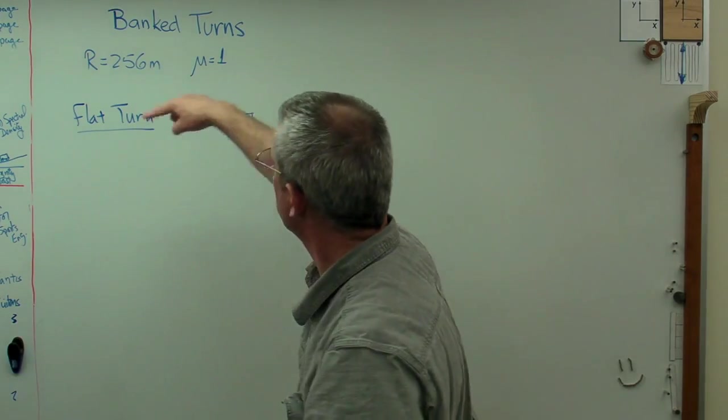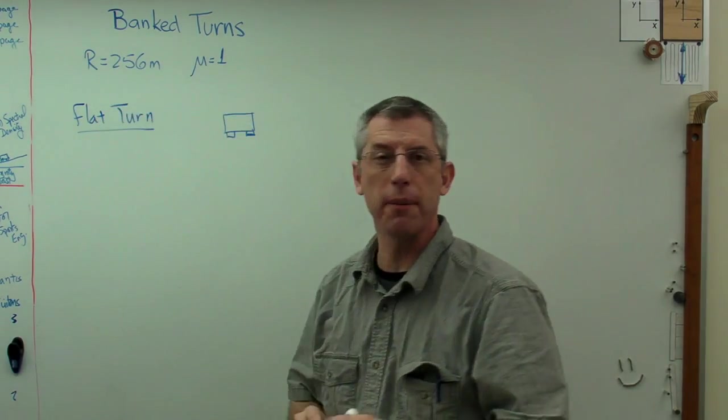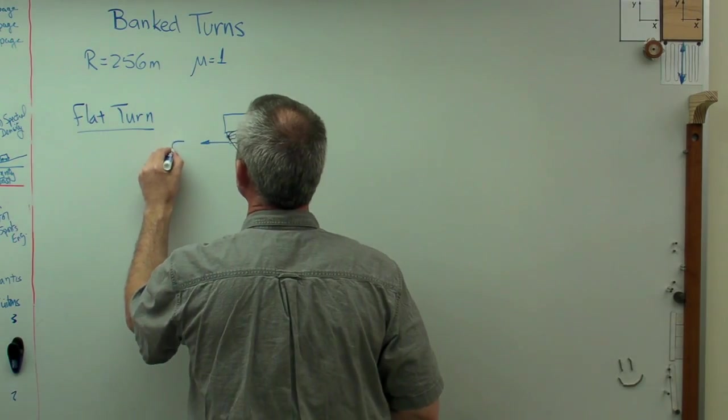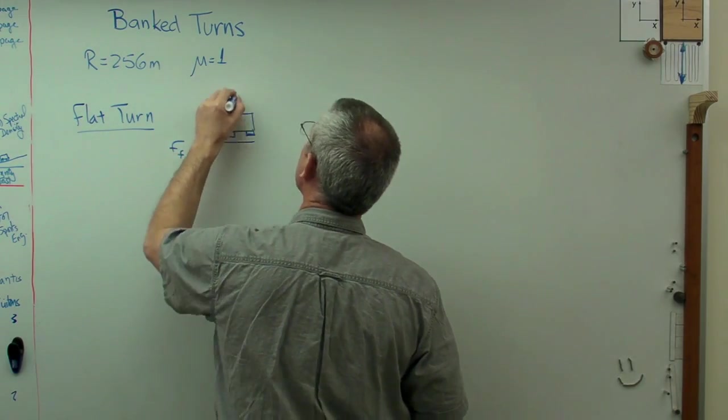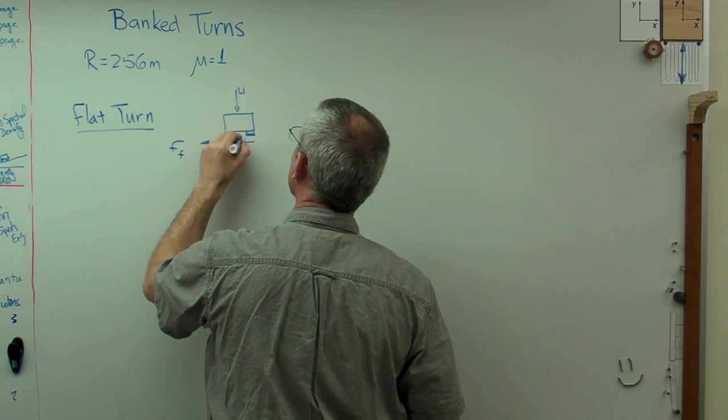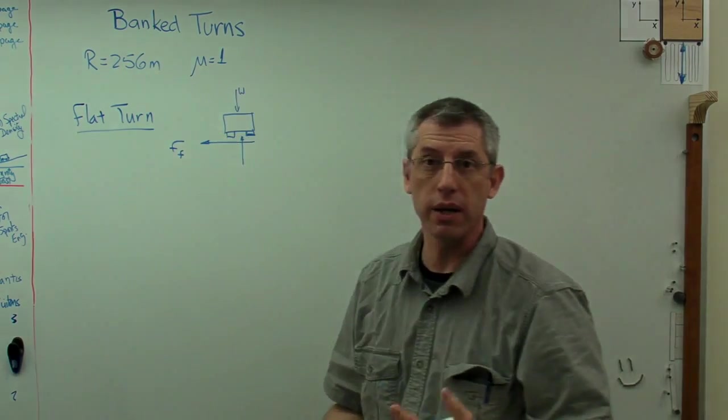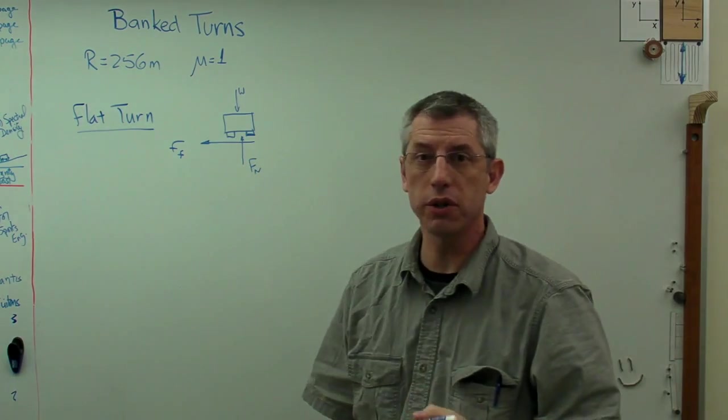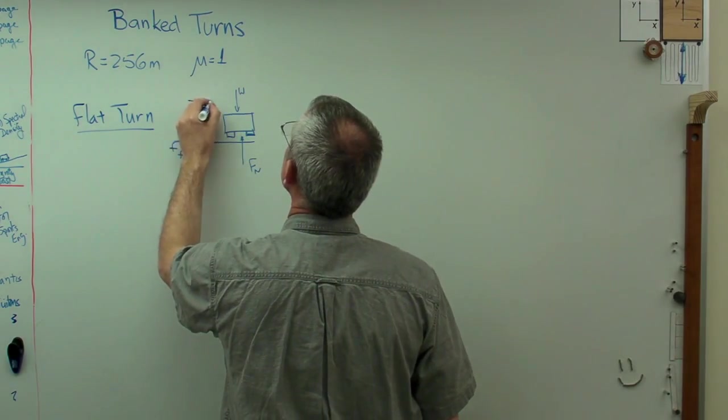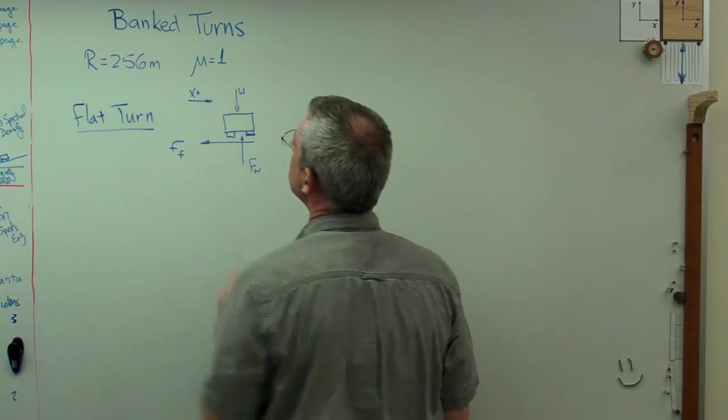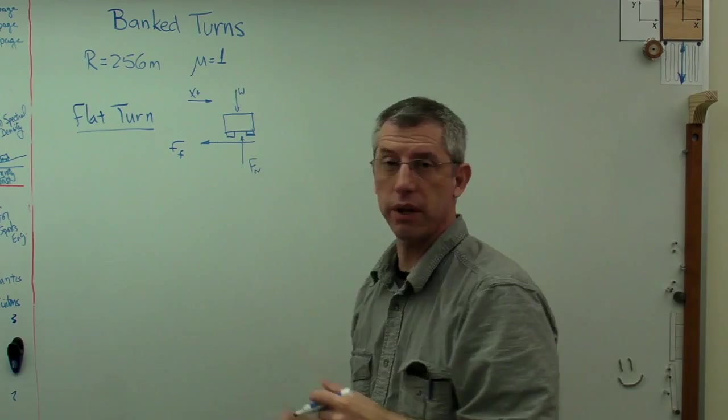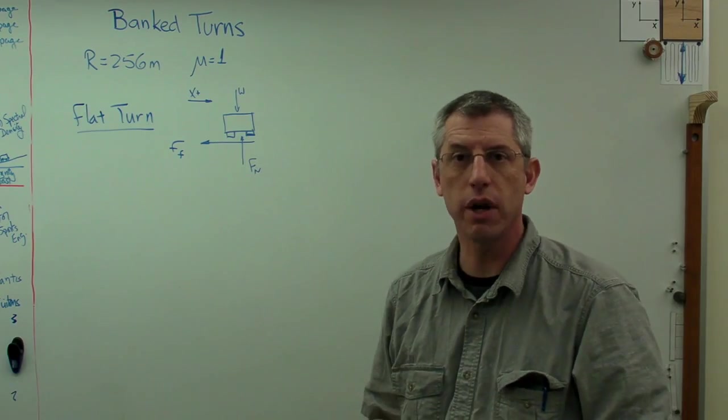Let's say we're looking at it from the back and it's turning left. If it's going around a flat turn, the friction force on the tires is there. The weight of the car is down and of course the normal force countering the weight is up. Those are all the external forces on this car. I'm going to need a coordinate system, so let's say x is positive to the right. There's no accelerations in the vertical direction, only in the horizontal.